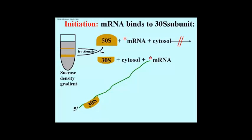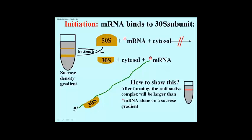How do we know that this association is actually taking place? Very simply, you take this material and run it back on a gradient and show that the 30S subunit, where it fractionates in the upper part of the gradient, is now radioactive because it's had mRNA added to it. It might even be moving a little faster because the mRNA adds some bulk to this structure. Here we have a picture of the sucrose gradient that shows that the radioactive complex would be larger than the mRNA alone on a sucrose gradient.